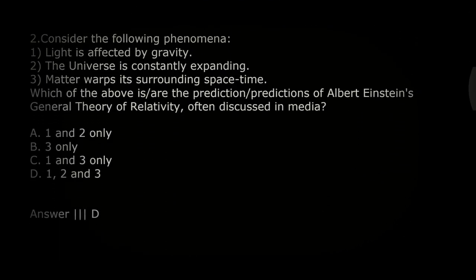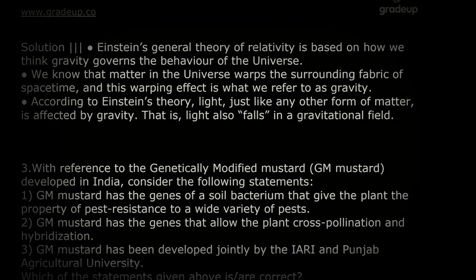The next question: consider the following phenomena — light is affected by gravity, the universe is constantly expanding, and matter warps its surrounding space-time. Which of these are predictions of Albert Einstein's general relativity theory? The correct option is D — all three: 1, 2, and 3. Einstein's general theory of relativity is based on how gravity governs the behavior of the universe. Matter in the universe warps the surrounding fabric of space-time, and this warping effect is what we refer to as gravity.